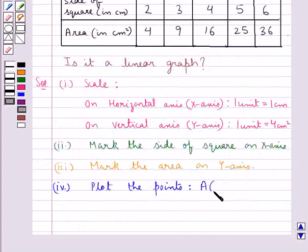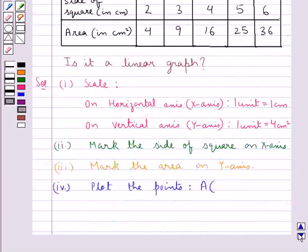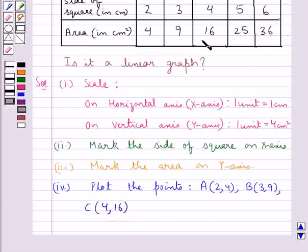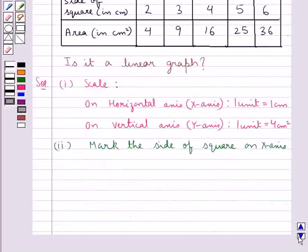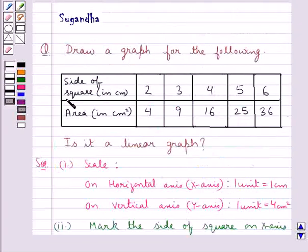Let the first point be A with coordinates (2, 4), where 2 is the x coordinate corresponding to the side of the square and 4 is the y coordinate corresponding to the area. Let the next point be B with coordinates (3, 9), where 3 is the side and 9 is the area. Then C with coordinates (4, 16), where 4 is the side and 16 is the area. Let the next point be D with coordinates (5, 25), where 5 is the side and 25 is the area. And then we have point E with coordinates (6, 36), where 6 is the side and 36 is the area.